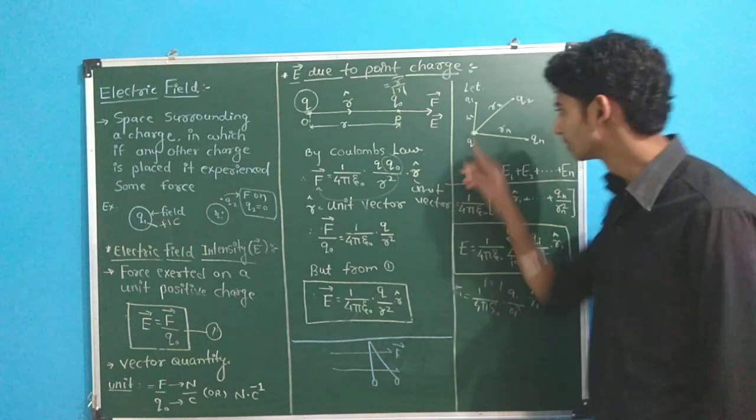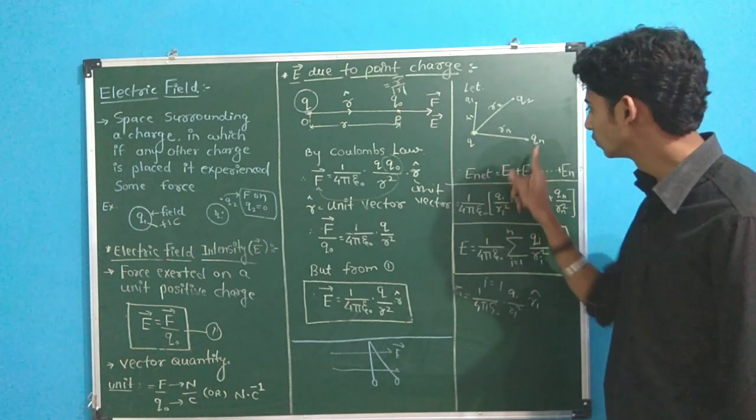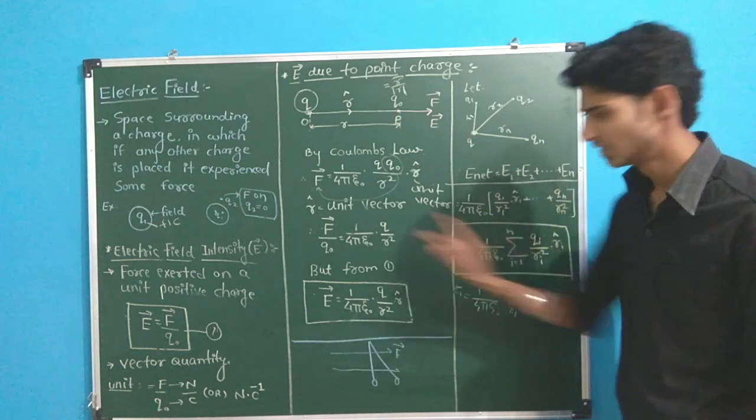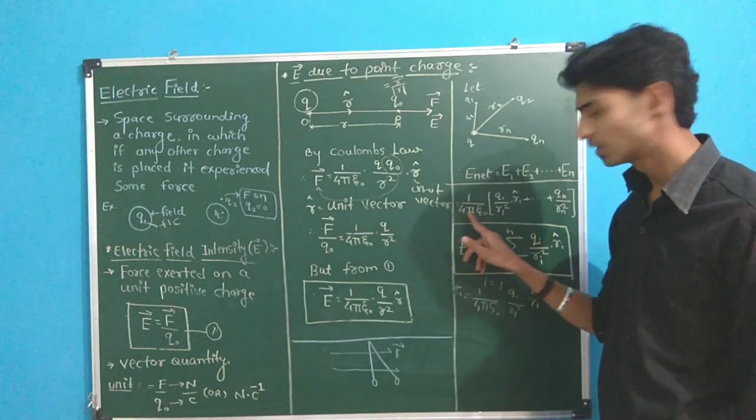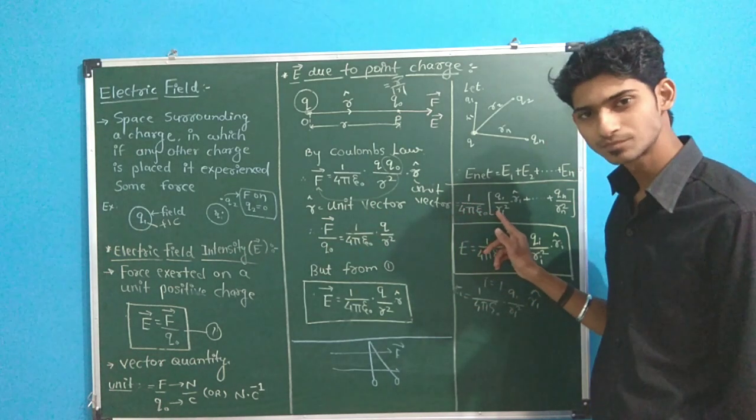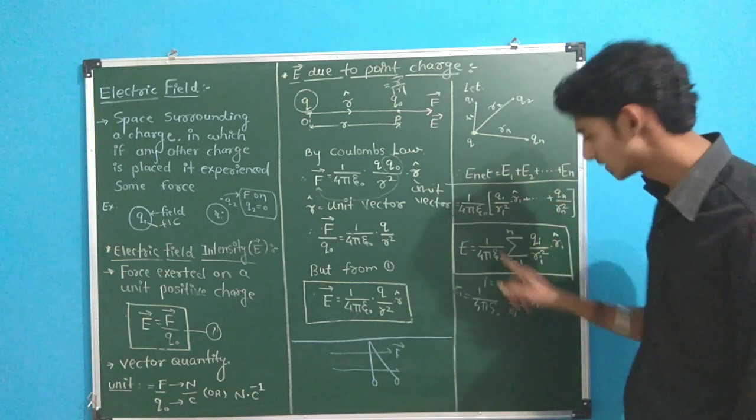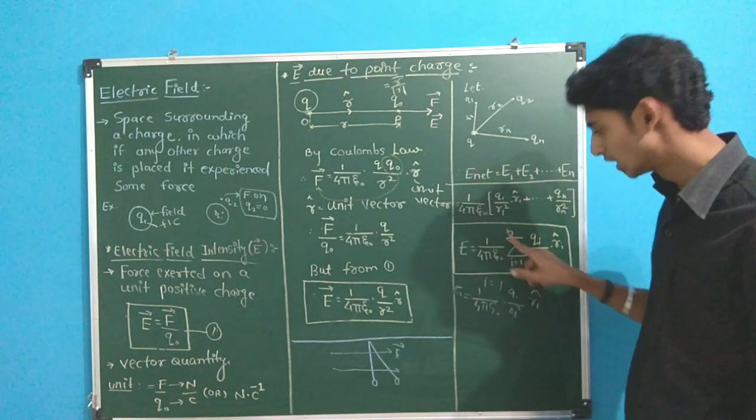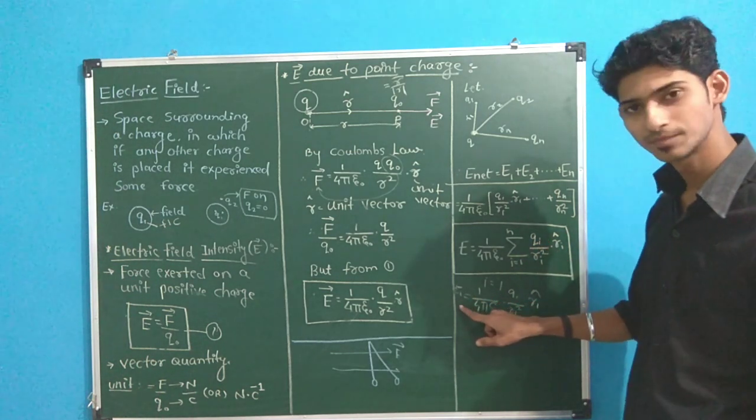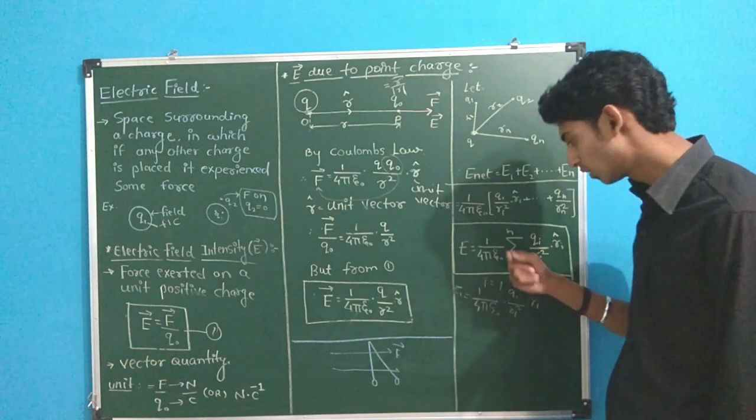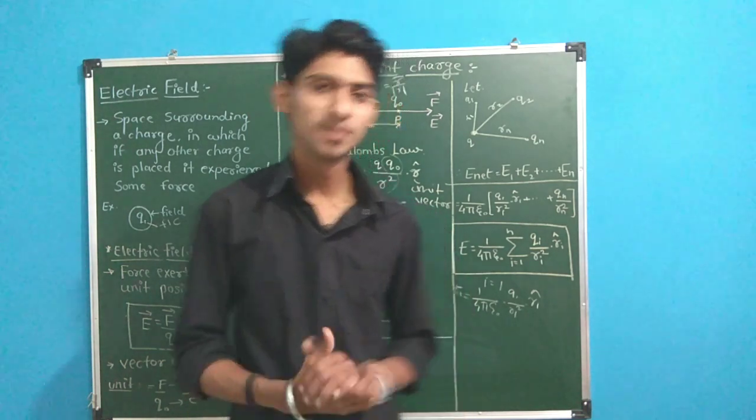In terms of intensity, same thing - Q1 has applied intensity E1, Q2 has applied intensity E2, Qn has applied intensity En. This formula as it is. If you have put it here, the constant is 1 upon 4π epsilon 0. This is the constant. And whatever is left inside, if we convert this entire term into mathematics, we use summation i equal to 1 to n. If you put i equal to 1, you got E1, if you put 2, you got E2.